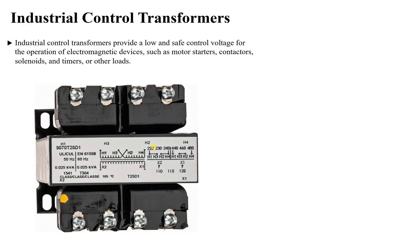If you look carefully, it consists of two main elements. You will see that here on the input side there are terminals H1, H3, H2, and H4. These are the terminals of the coils. Inside this transformer we have coils, and the first coil has two terminals: H1 and H2.